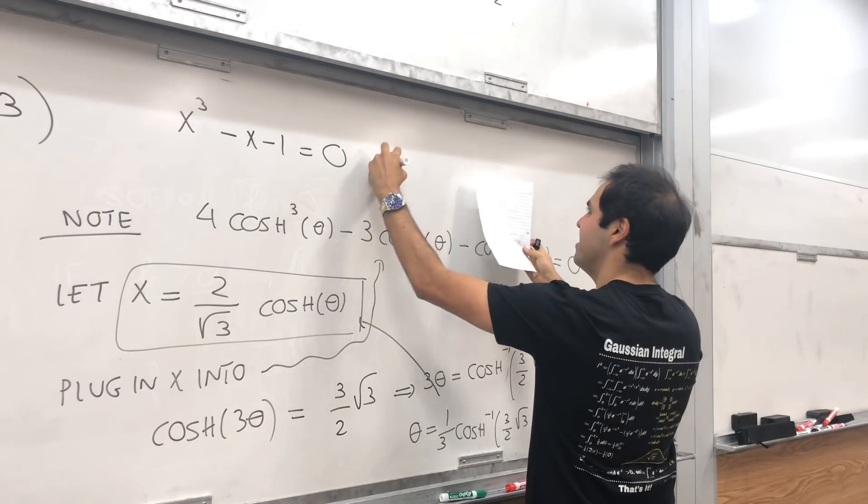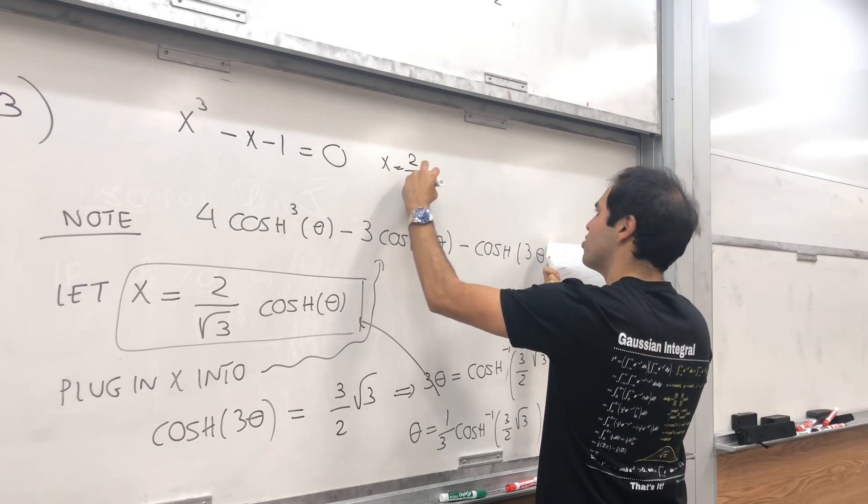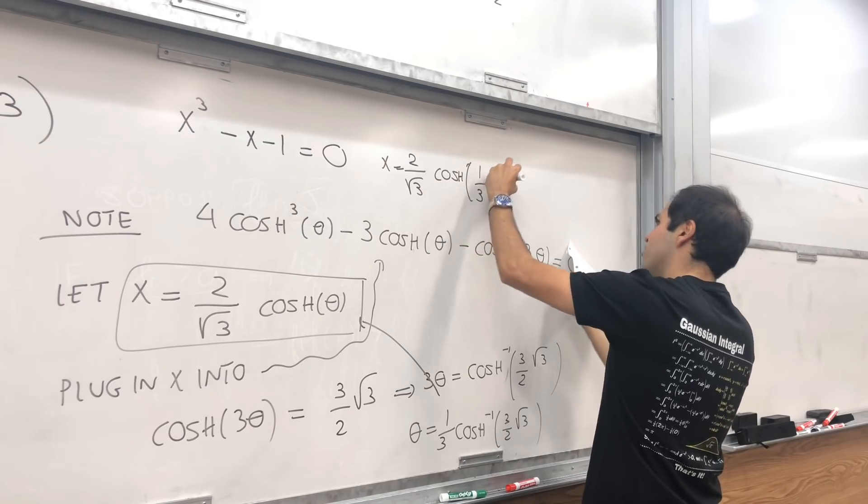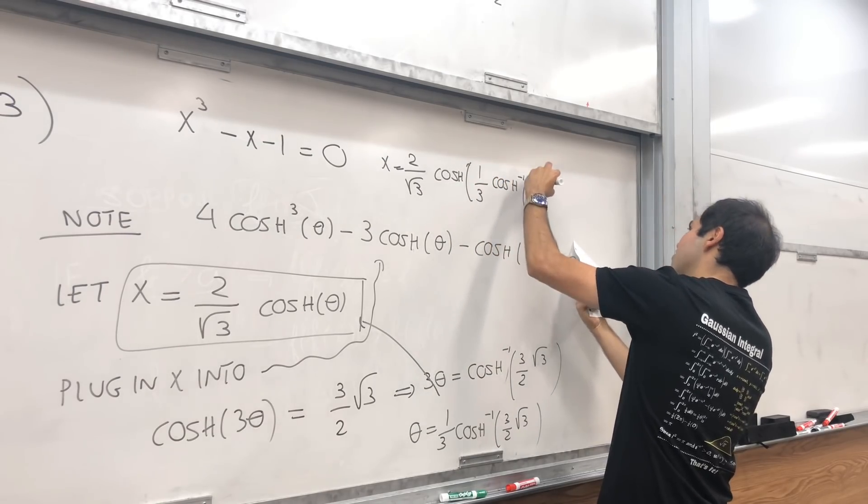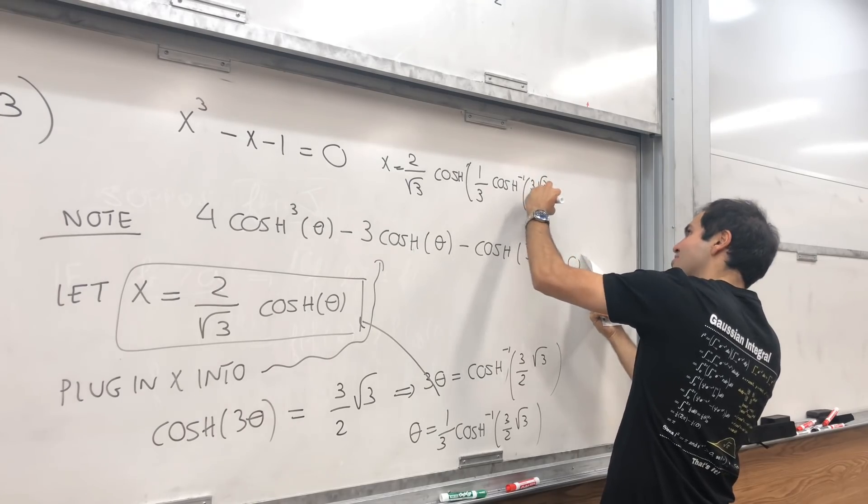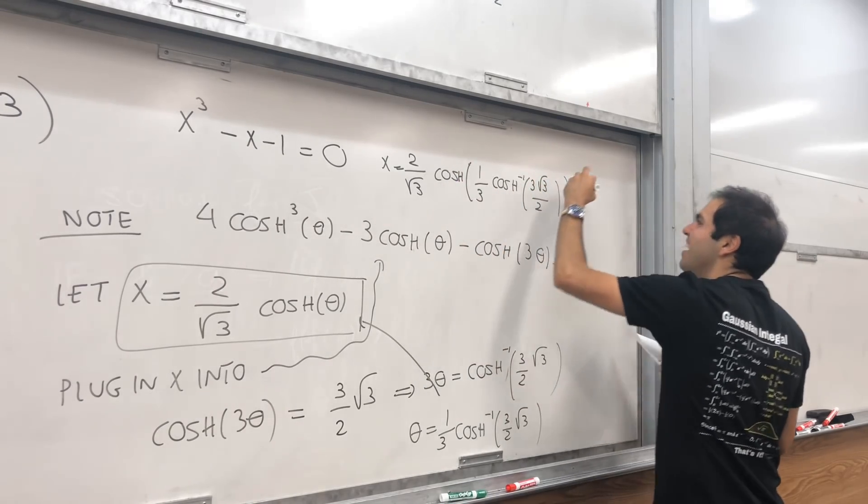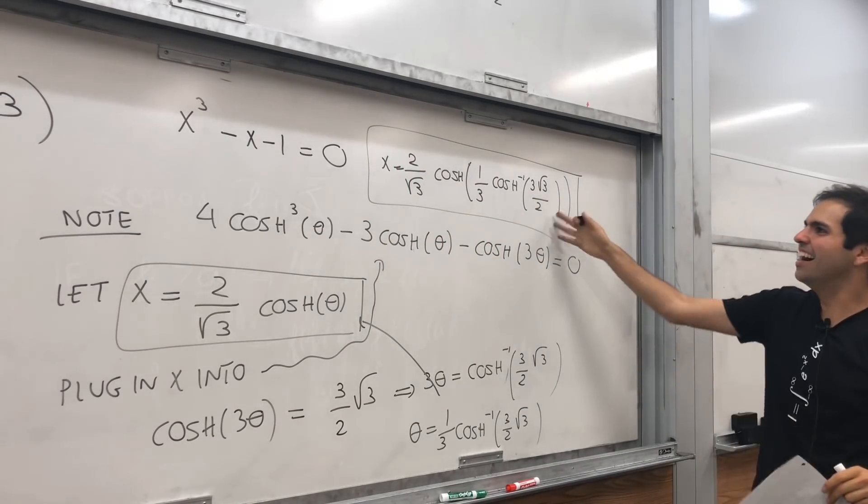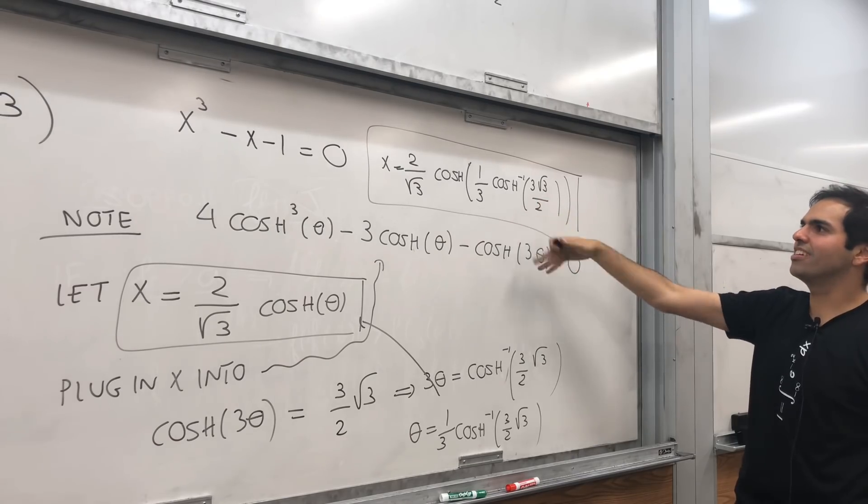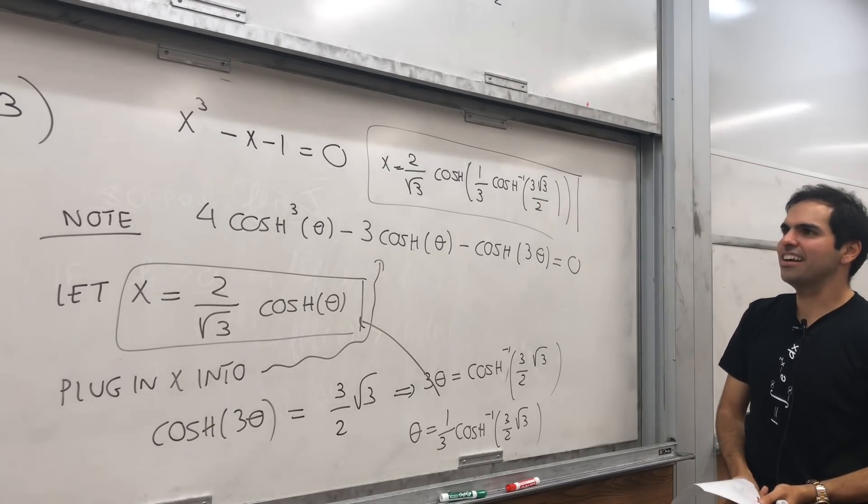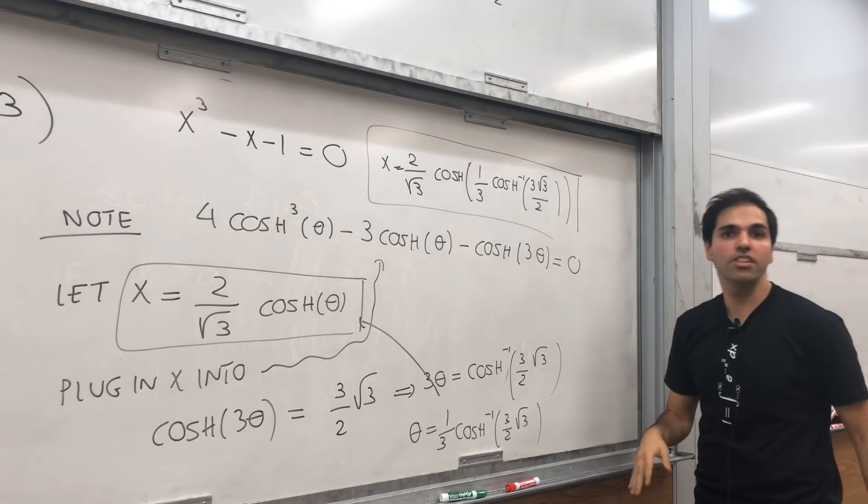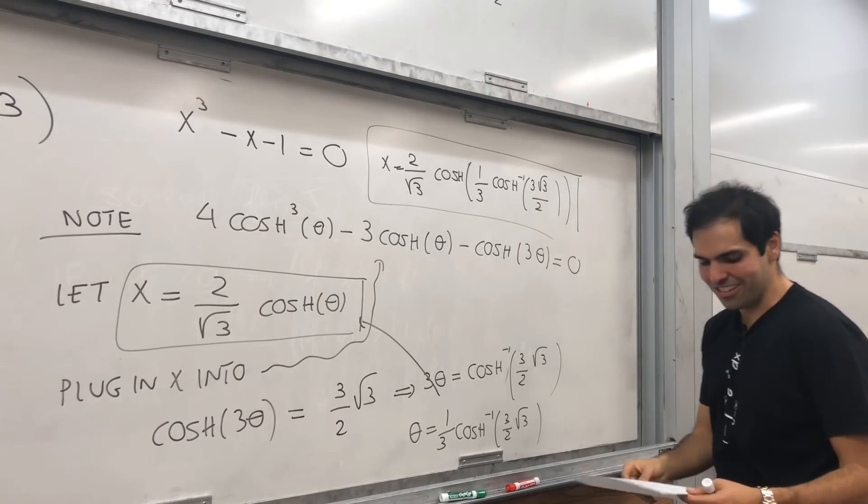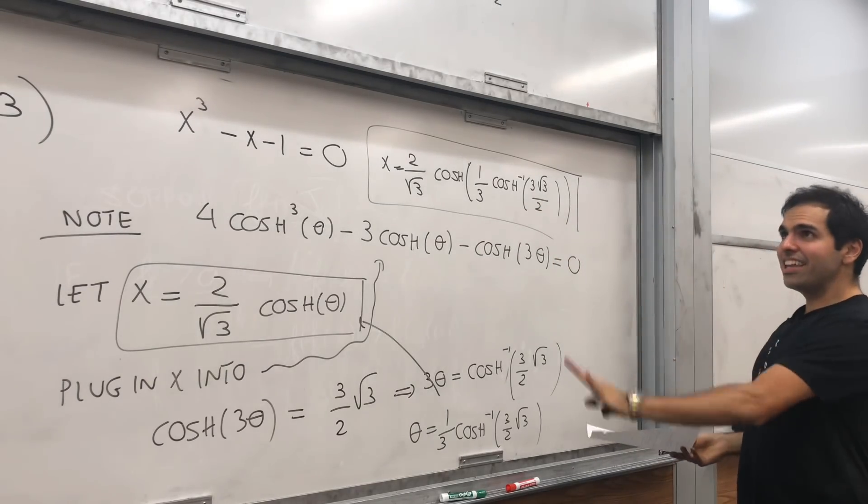And then you can just plug in theta into this equation. And you get x equals, I guess, 2 over square root of 3 cosh of 1 over 1 third arc cosh of 3 square root of 3 over 2. I hope YouTube doesn't restrict that again. Anyway, yeah, and this is a formula for x, if you want, in terms of cosh and arc cosh. It's a bit ugly, but in some other video I give a different formulation with cube roots and stuff, which makes a bit more sense. Okay, so that is the third property.